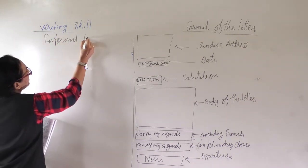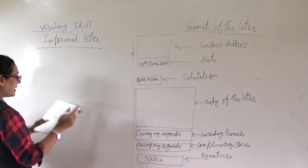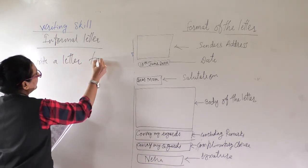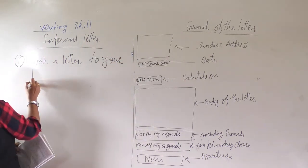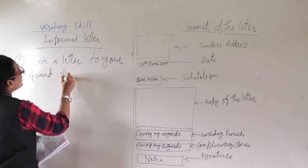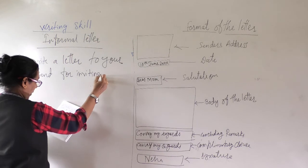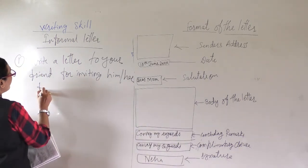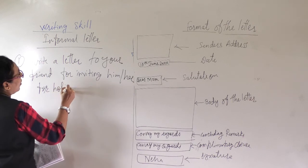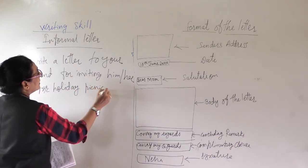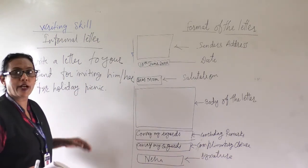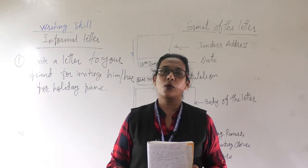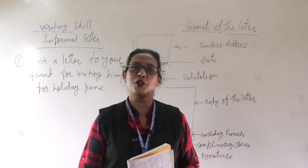Informal letter — write a letter to your friend inviting him or her for a holiday picnic. Now you write this example in your writing skill notebook. I hope dear children you understood this lesson, and tomorrow again you will get the exercise — you can solve that. Thank you and have a nice day.